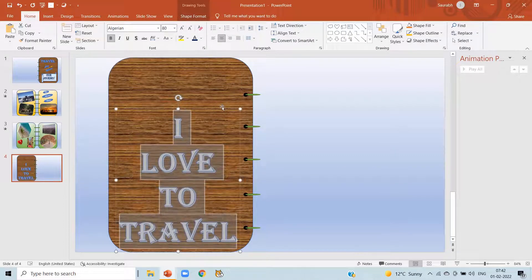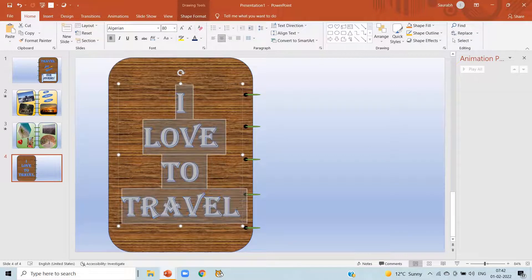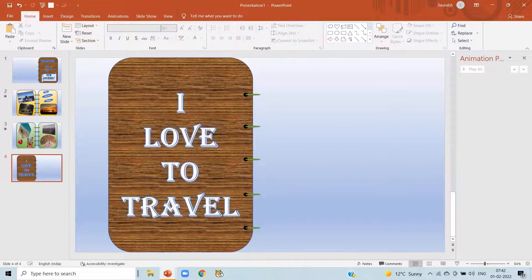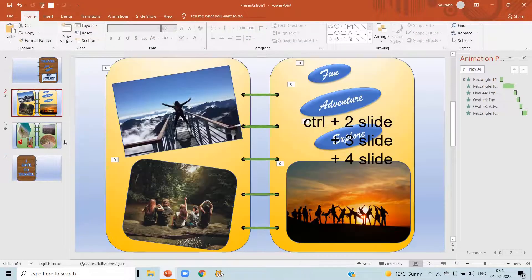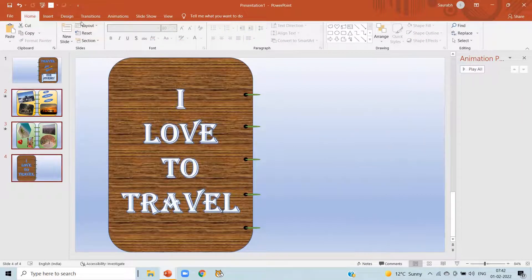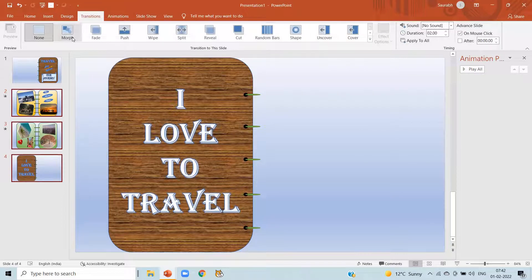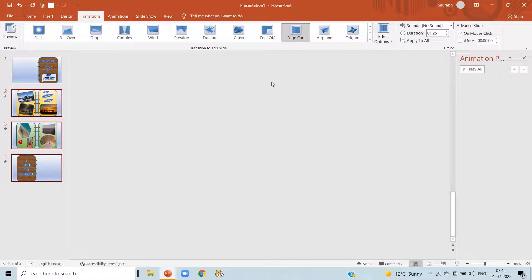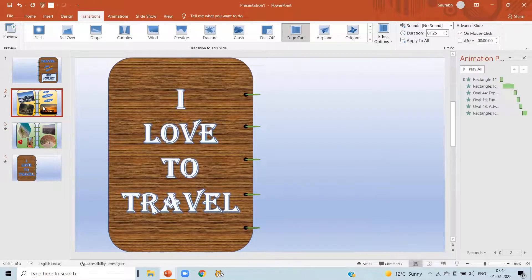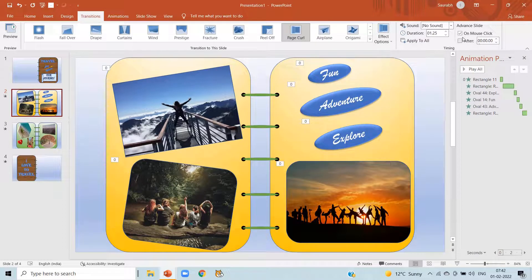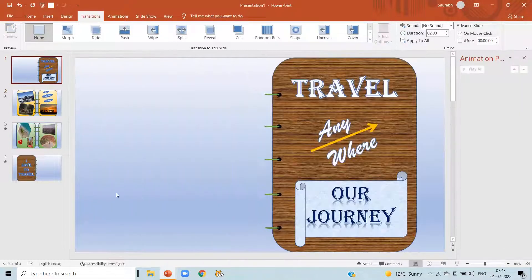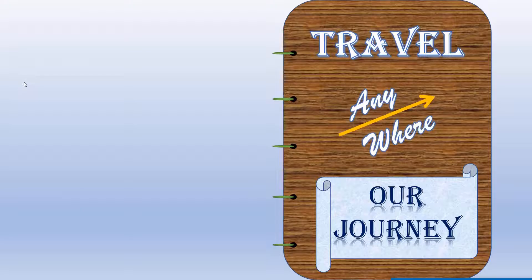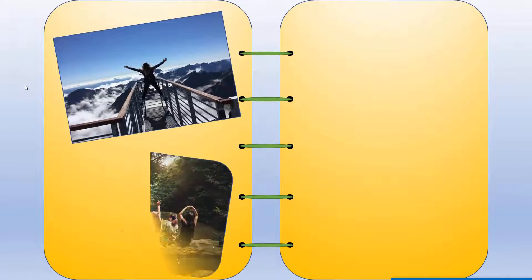Now we are on the most important part of our video — the transition effect that will give the scrapbook-type feeling. Select slides 2, 3, and 4, click on transition. Click the down arrow and here is an effect called page curl — click over there. It will give a book-type feeling. We have the option for mouse click or automatic — we can set the time. Now it's presentation time — the two-page photo album which we have created.